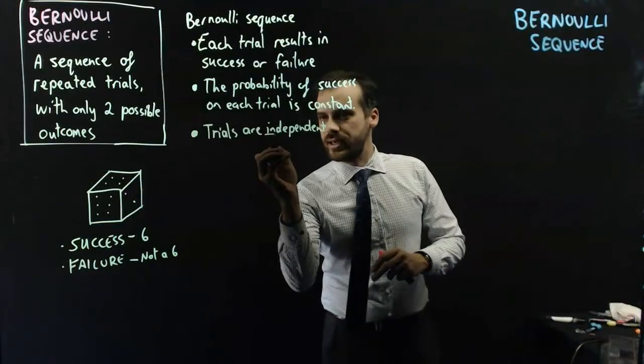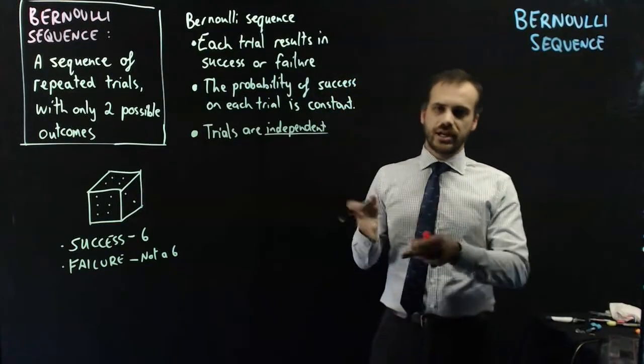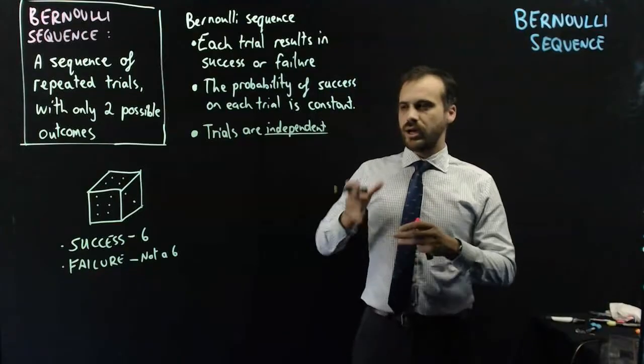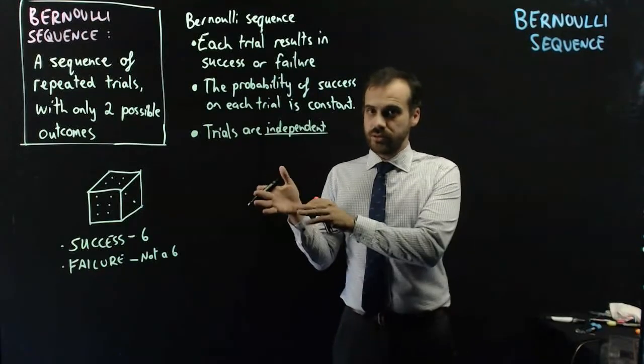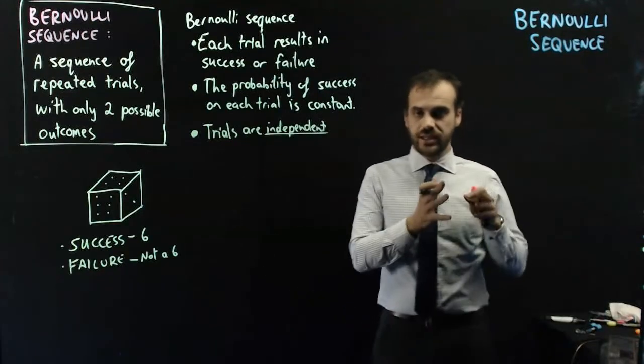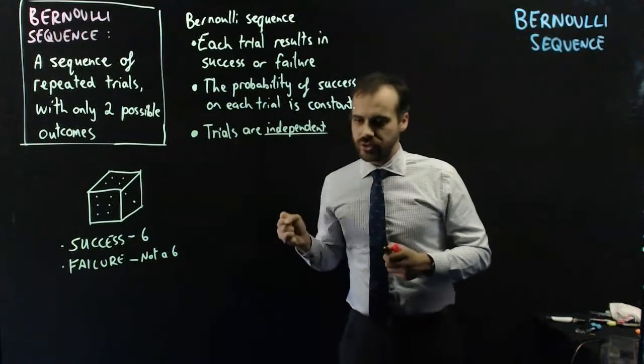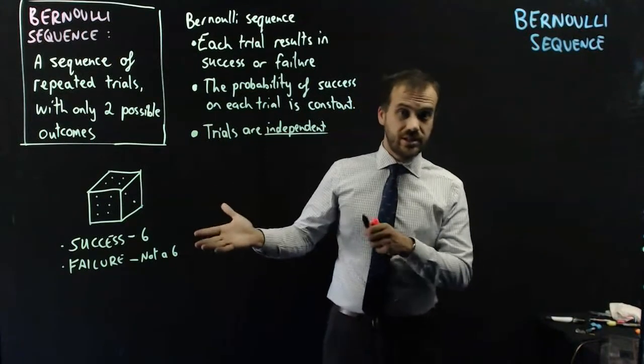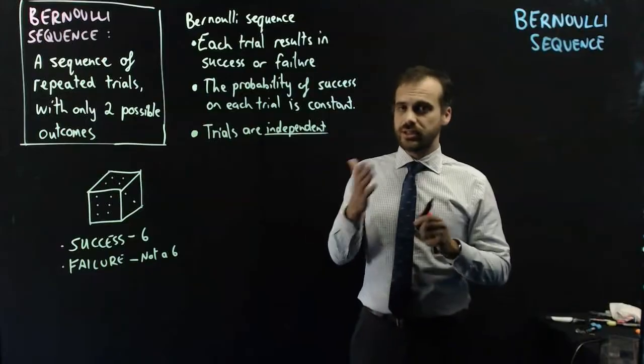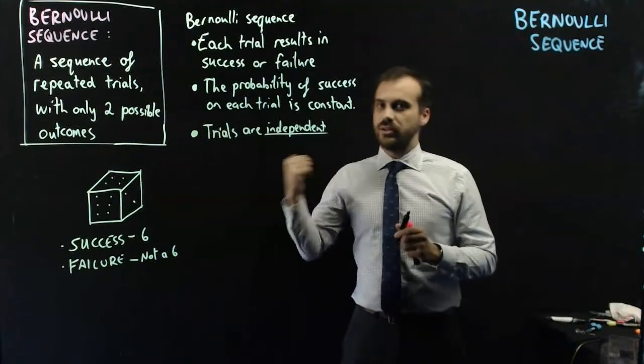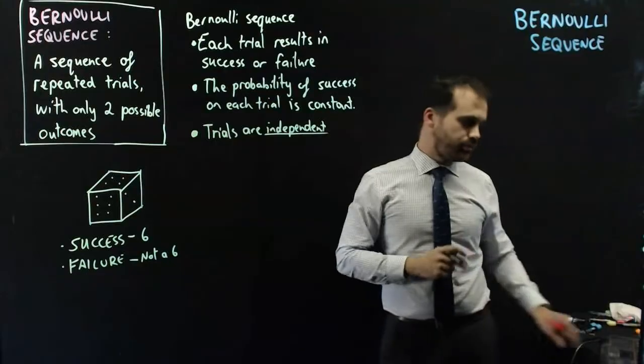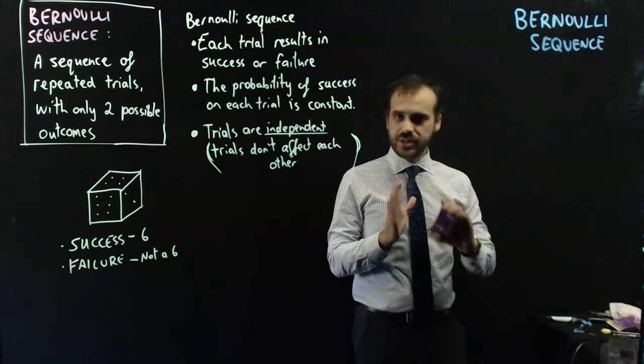Trials are independent. And you've done independent probability before. Independent means that one trial does not affect the next trial. And rolling a dice here, just if I roll a six, it's just as likely that the next one will be a six. It's still a one-in-sixth chance. The last roll doesn't affect the next roll. So, at this point, it feels really important that I give you an example of what's not a Bernoulli sequence.